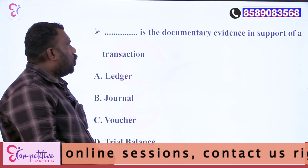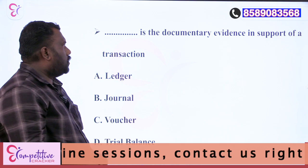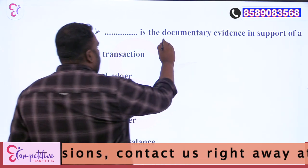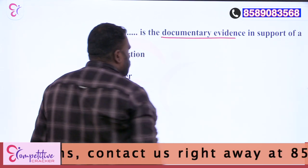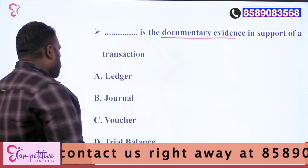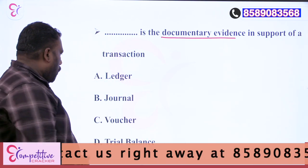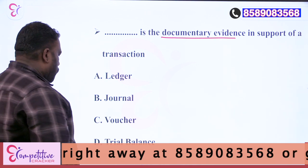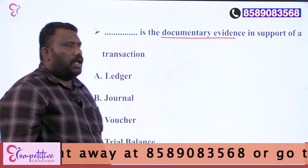Next: what is the documentary evidence in support of a transaction? Option A is the vendor. Option B is the journal. Option C is voucher. Option D is the trial balance.